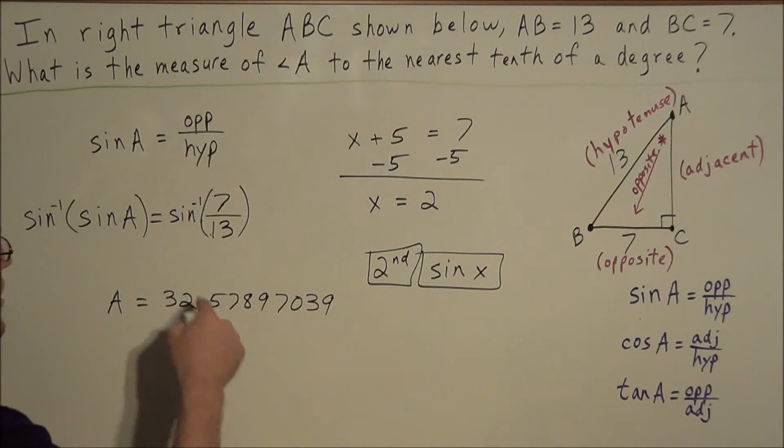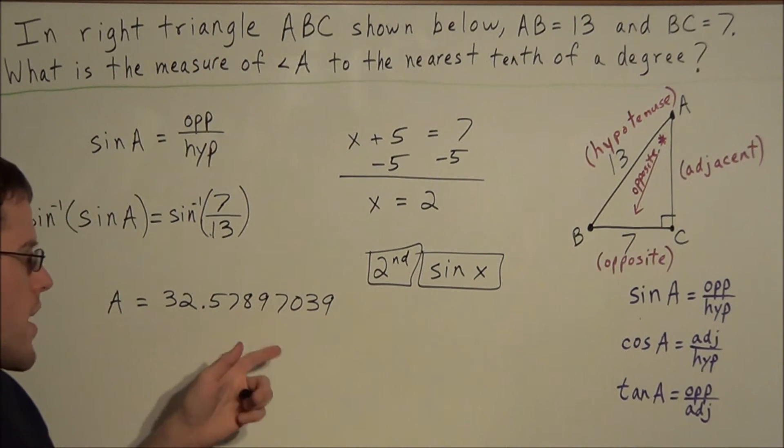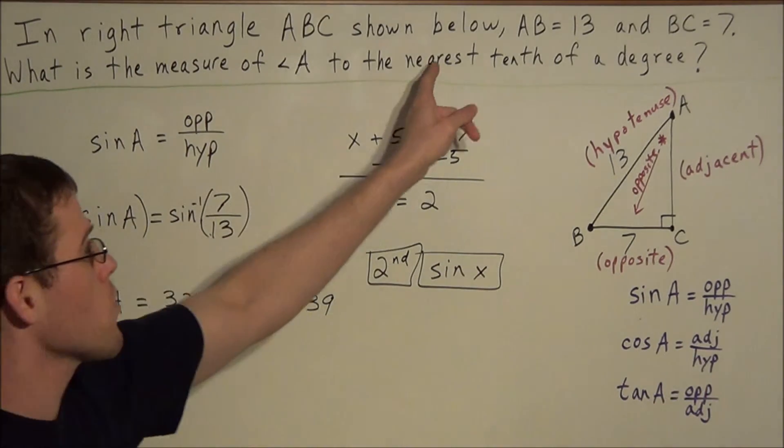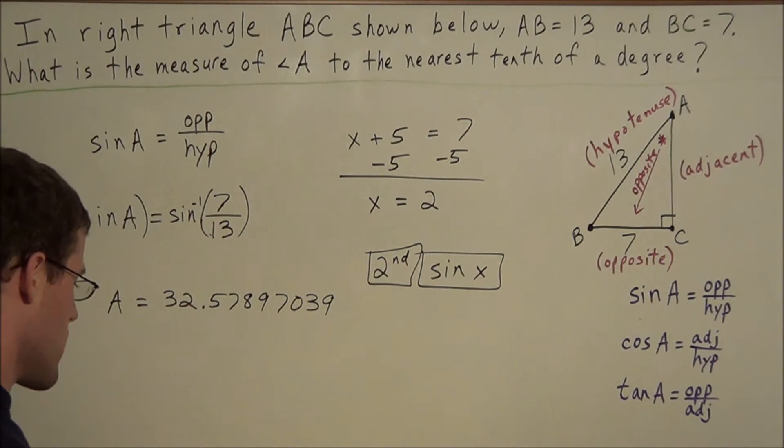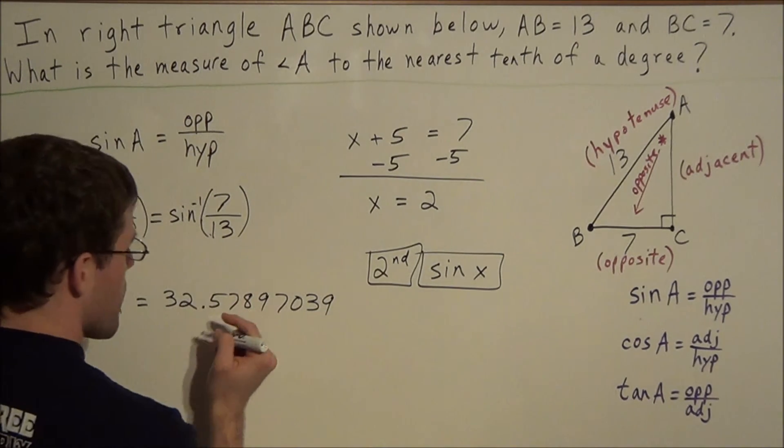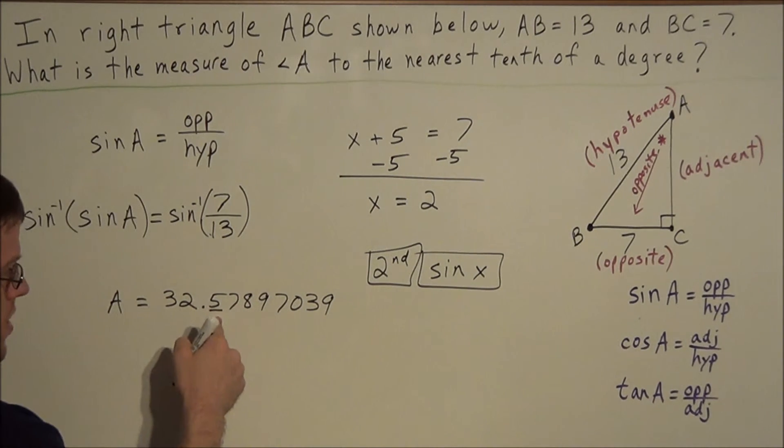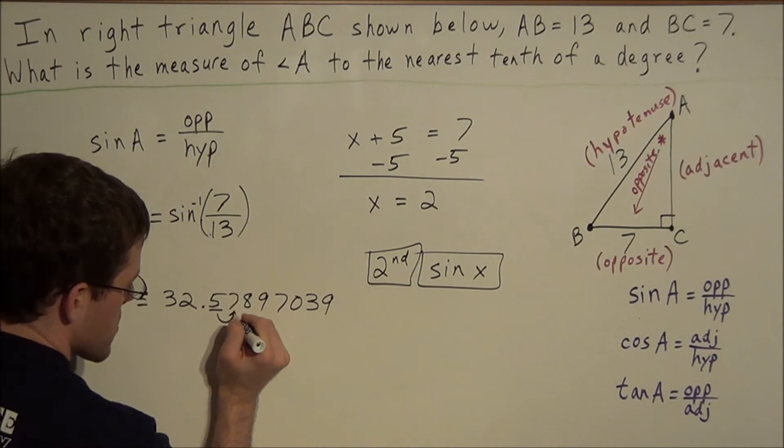But anyway, once you evaluate sine inverse of 7 over 13, you get 32.57897039. And it goes on, but for this problem, what we want to find is we're going to round this to the nearest tenth of a degree. So one way, a fail-safe way of finding how to round to the nearest tenth, you could underline up to the tenths place. So we notice that we have a 5 in our tenths place.